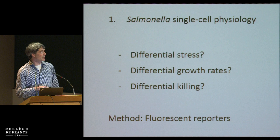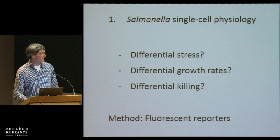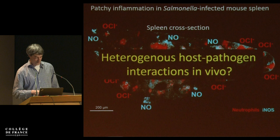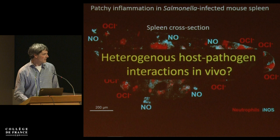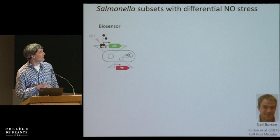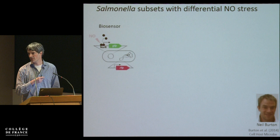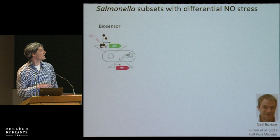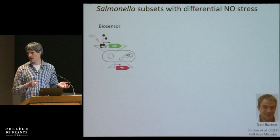We ask the typical questions: what is there about stress? What about growth rate? What about killing of these bacteria? For this purpose we use mostly fluorescent reporters. As an example for the stress response — there are patches of NO-producing cells. We use Salmonella carrying an inducible promoter that responds to NO coupled to green fluorescent protein. We also make a chromosomal constitutive RFP cassette, so every bacterium fluoresces red, allowing us to see all bacteria regardless of GFP expression.